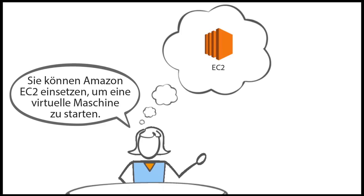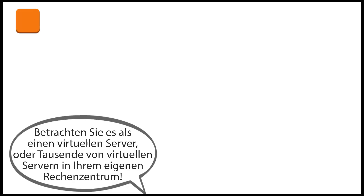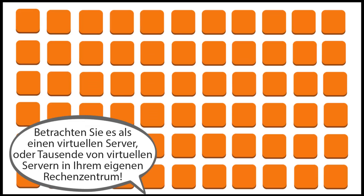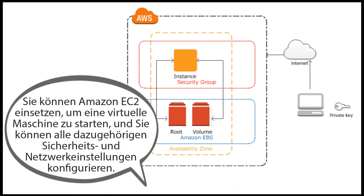You can use Amazon EC2 to launch a virtual machine — think of it as a virtual server, or thousands of virtual servers, as your own data center. You can configure all of the associated security and networking settings.